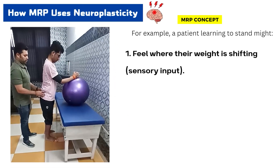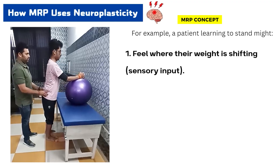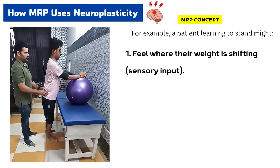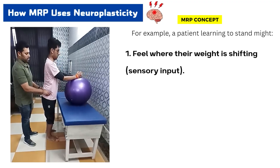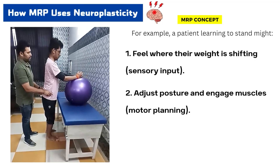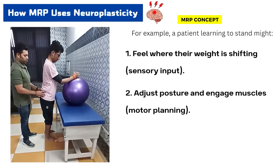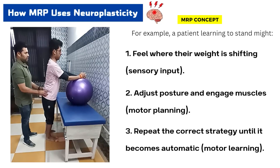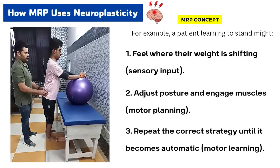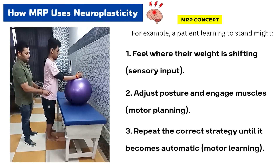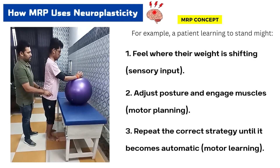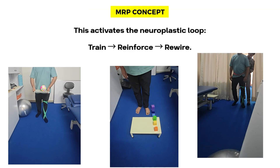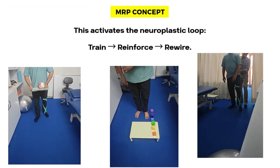For example, a patient learning to stand might: one, feel where their weight is shifting — sensory input; two, adjust posture and engage muscles — motor planning; three, repeat the correct strategy until it becomes automatic — motor learning. This activates the neuroplastic loop: train, reinforce, rewire.